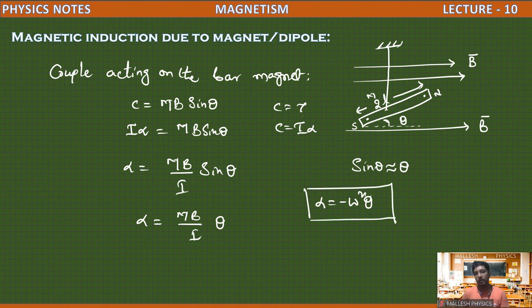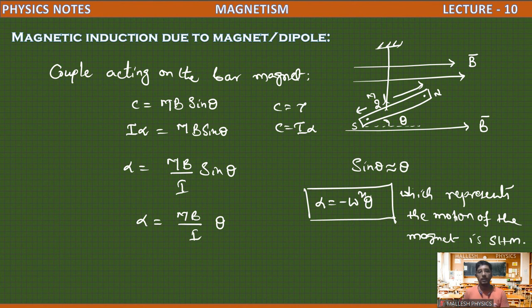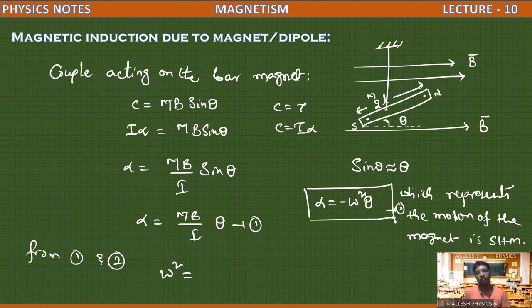Since alpha equals omega squared theta, this equation represents that this magnet produces simple harmonic motion about its mean position. The motion of this bar magnet is SHM. Comparing equation one and two, we can write omega squared equals MB divided by I.